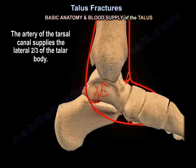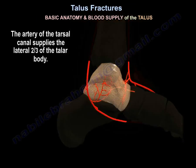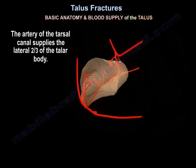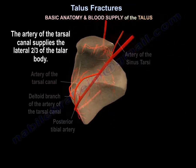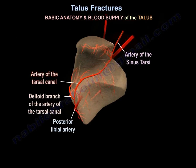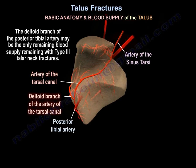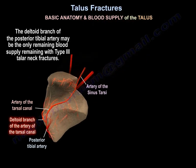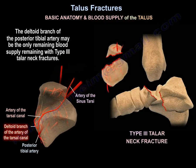The artery of the tarsal canal supplies the lateral two-thirds of the talar body. The deltoid branch of the posterior tibial artery may be the only blood supply remaining in type 3 talar neck fractures.